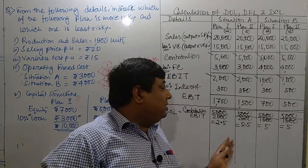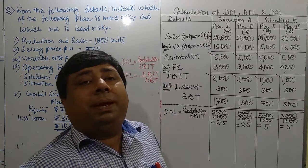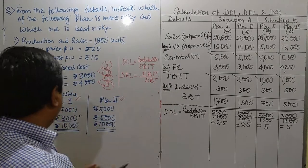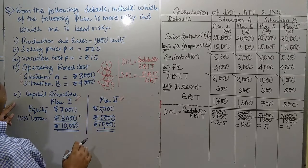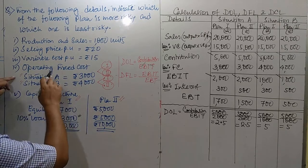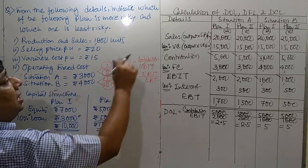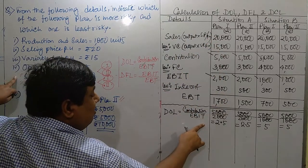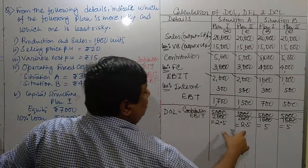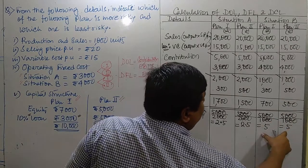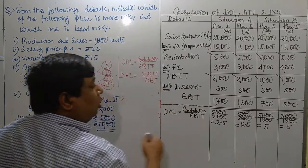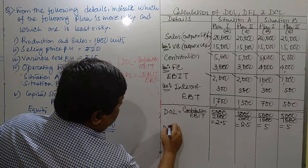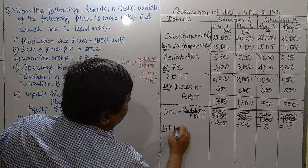Why does operating leverage remain the same irrespective of plan? As stated, operating leverage is mostly related to fixed expenses, and fixed cost is classified under situation A and situation B. That is why under situation A we get 2.5 and 2.5, and under situation B we get 5 and 5 as our operating leverage.